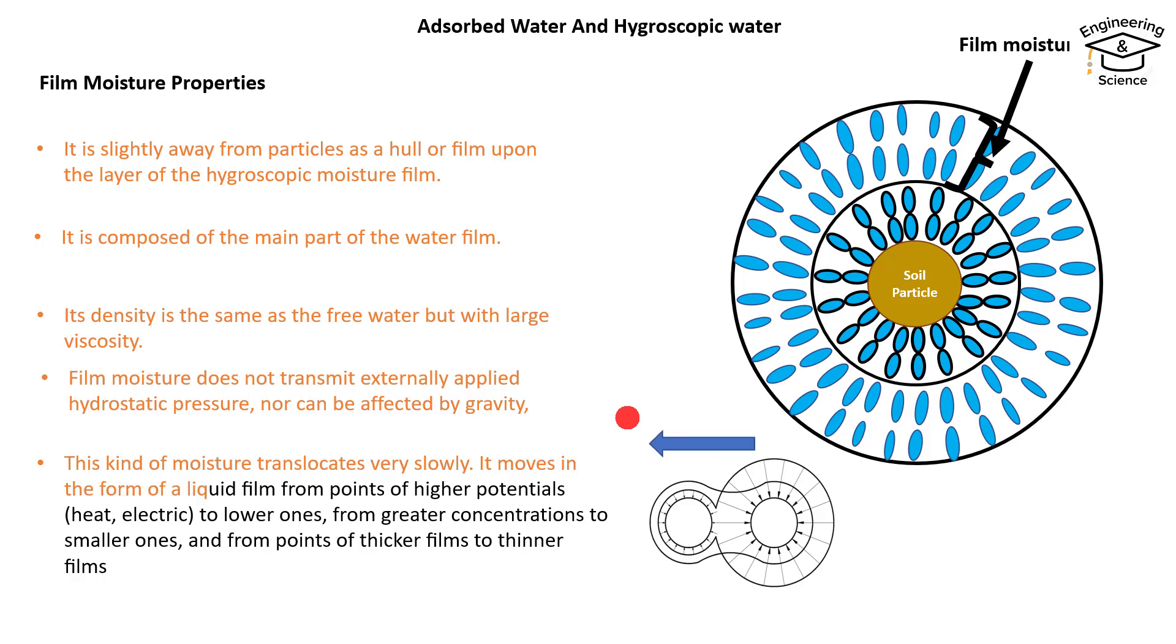It moves in the form of a liquid film from points of higher potentials (heat or electric) to lower ones, from greater concentrations to smaller ones, and from points of thicker films to thinner films, as you see in the image.